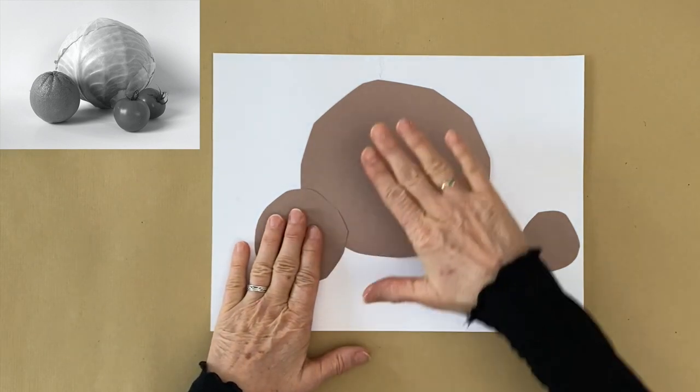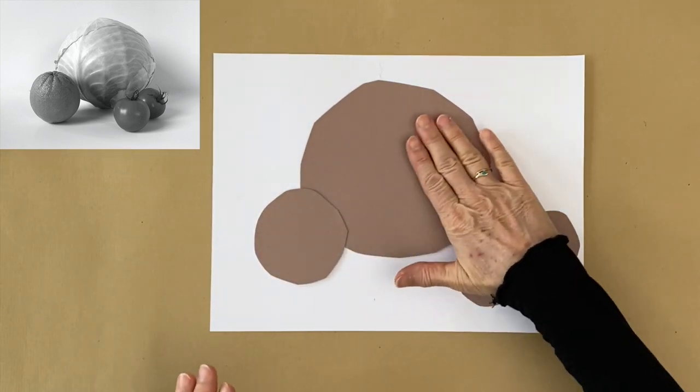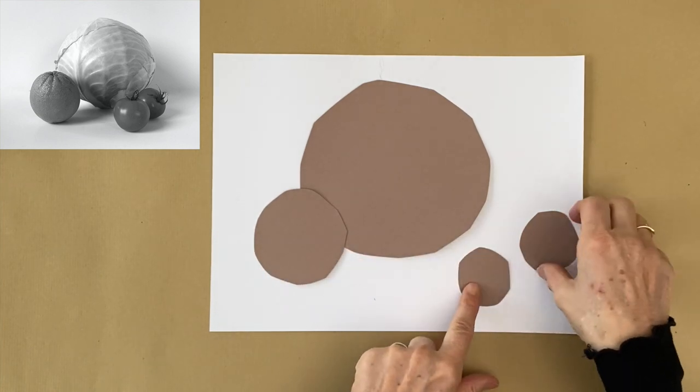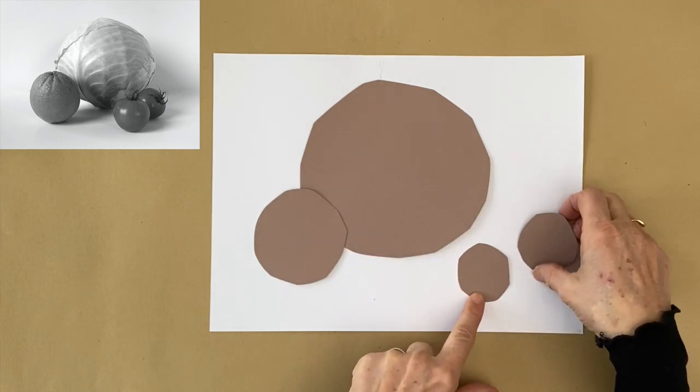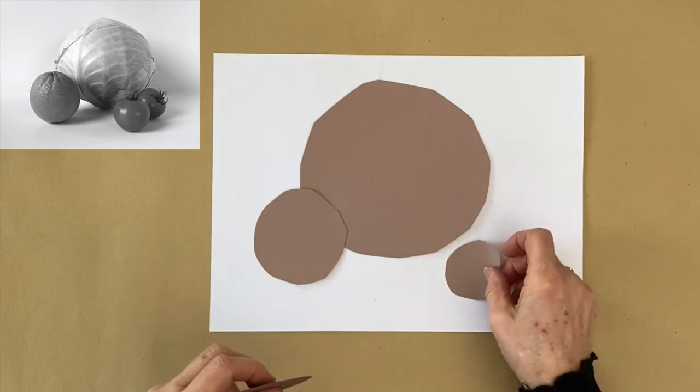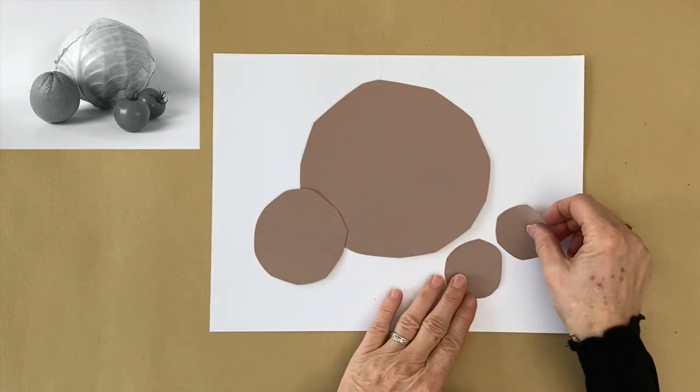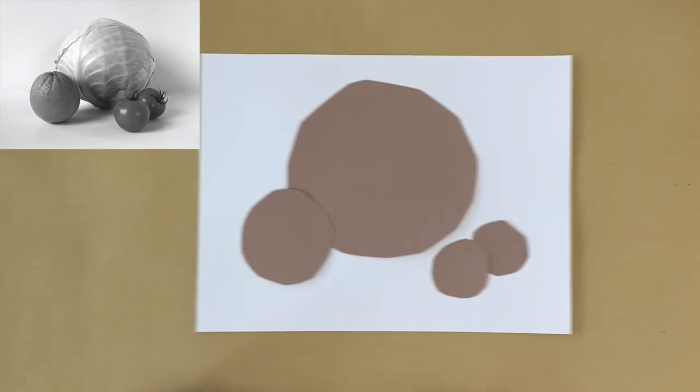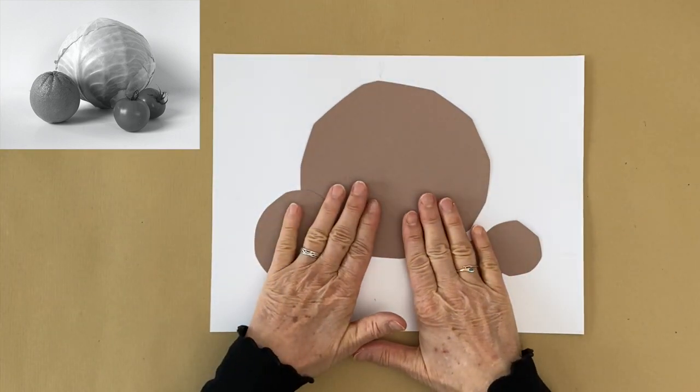And the same here. If you have two tomatoes you might want to arrange them in a way that you have clear overlaps. Good. That was the second problem solved.